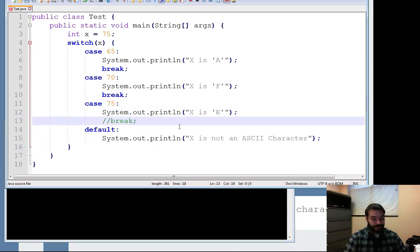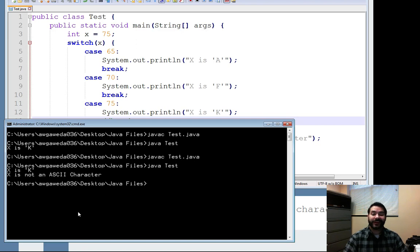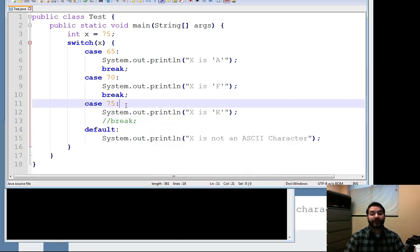If I remove that break statement, then what will happen is, not only is it going to say X is K, but it will actually move on. And then that last section, we haven't talked about just yet, but it is known as the default. And that's the end all, be all. This is what will be displayed if I don't exit out of my code.